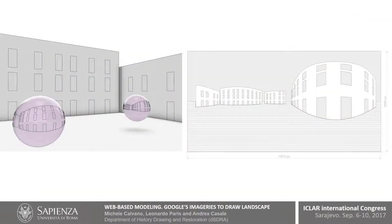A panorama is a photograph whose support is not a plane but a sphere. On this is imprinted the surrounding space. The spherical image can also be projected on the plane by proposing equirectangular representations.